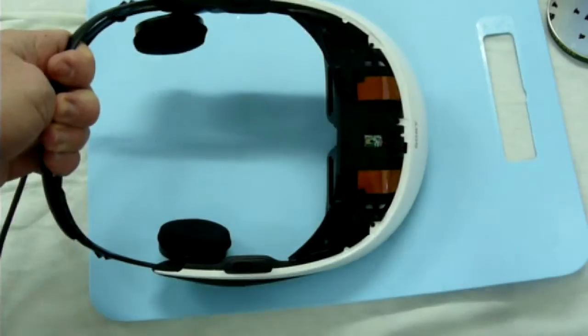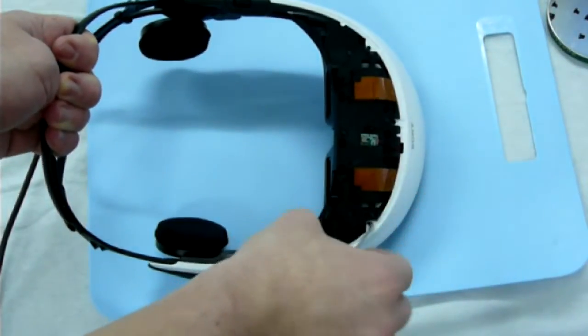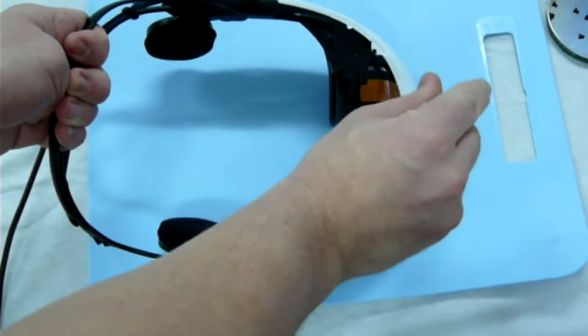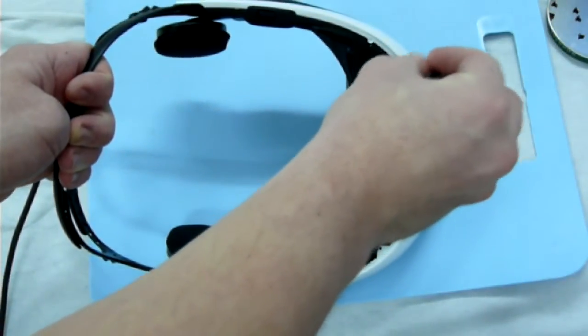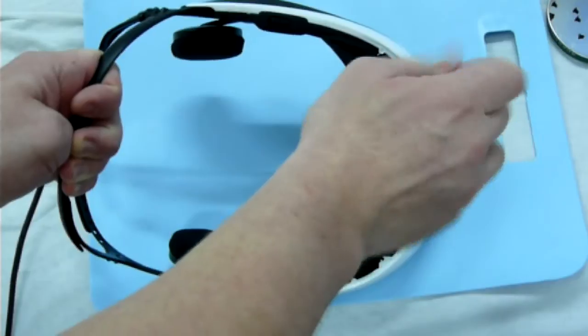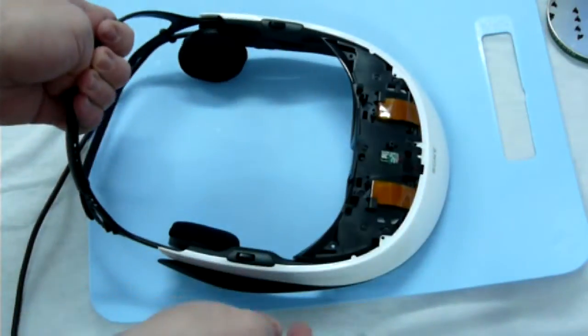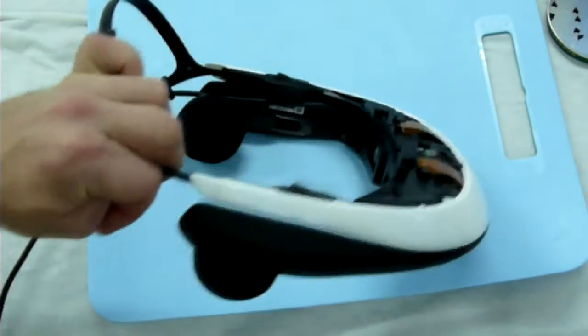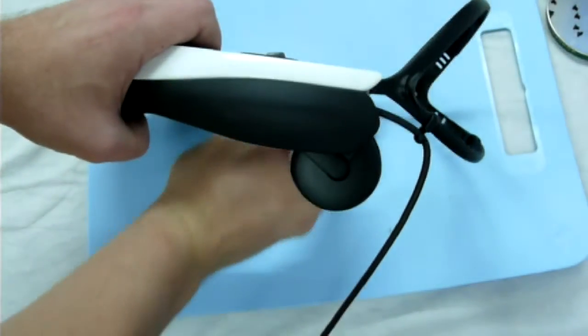Now remove the screws holding the white plastic part. For the side screws, use the screwdriver I mentioned before.